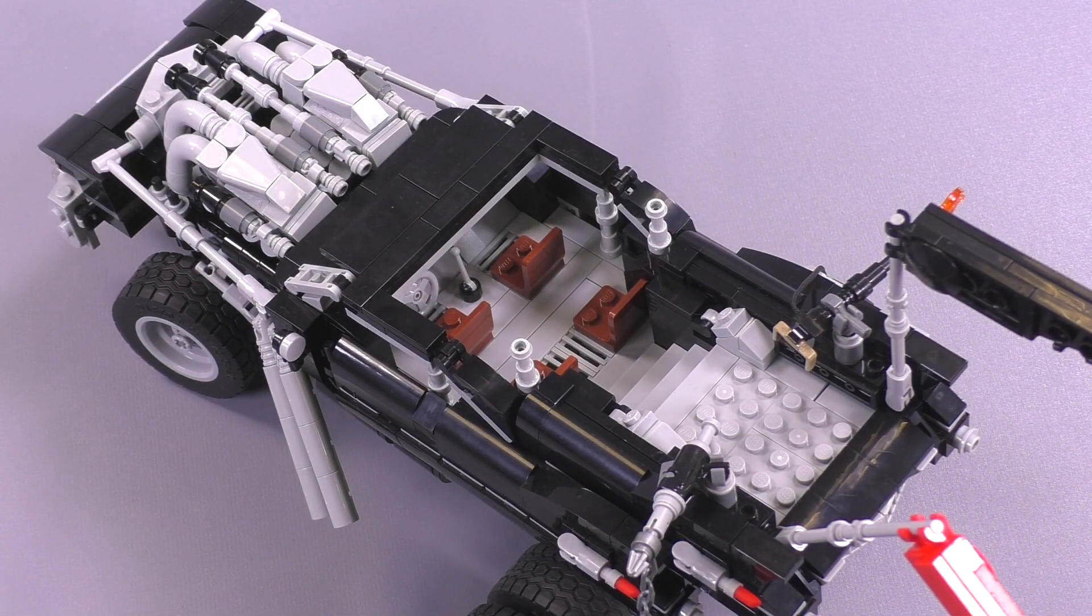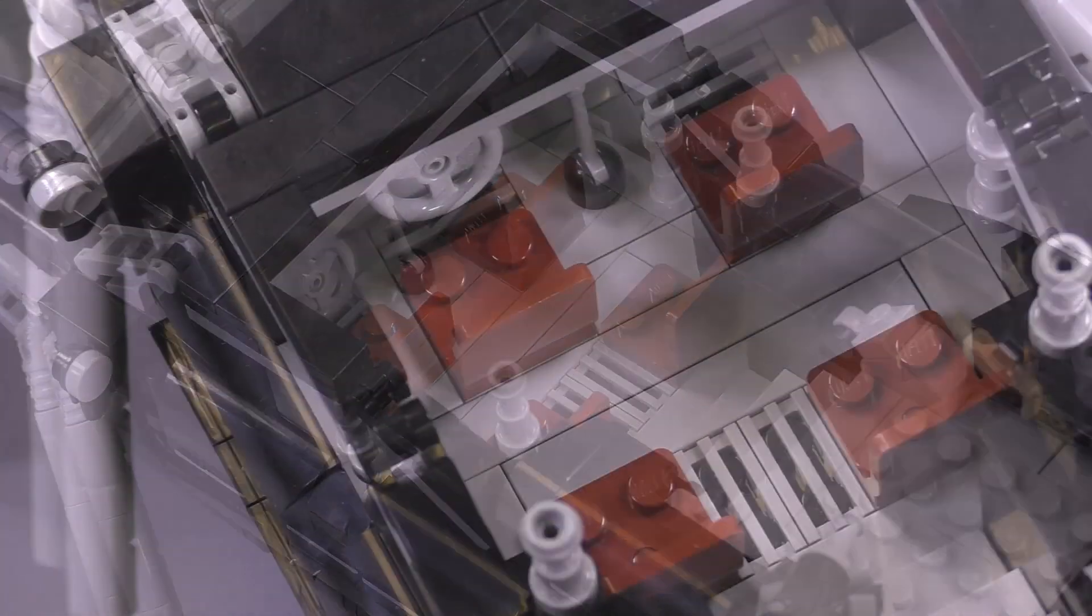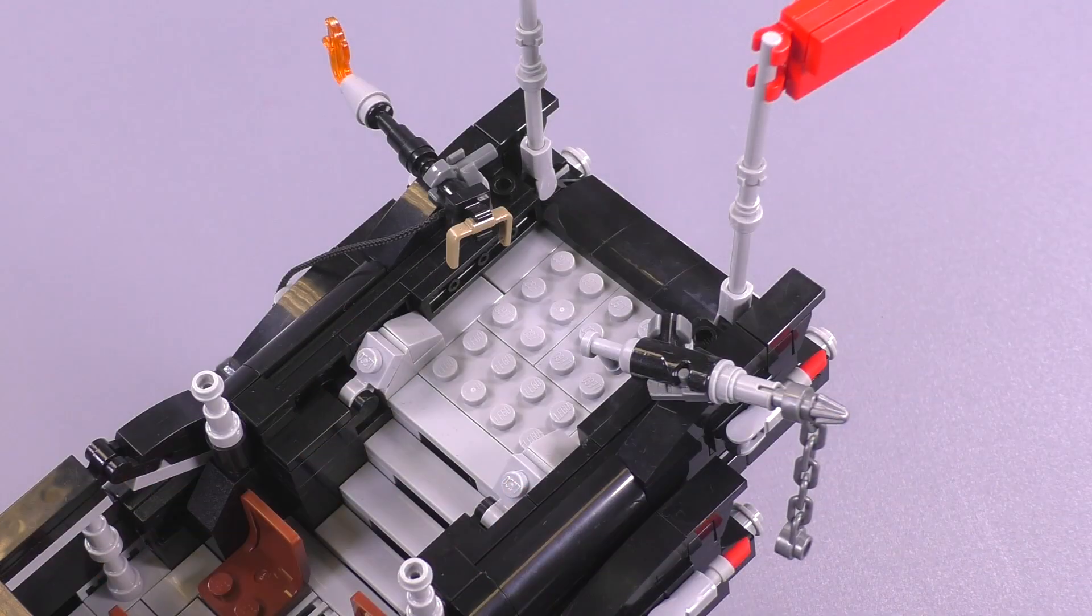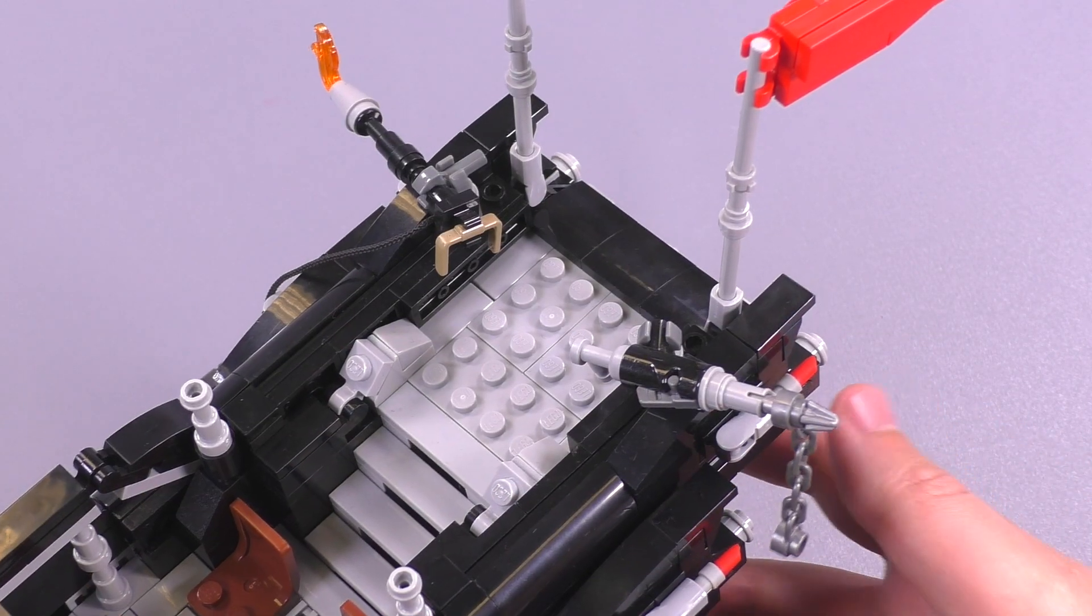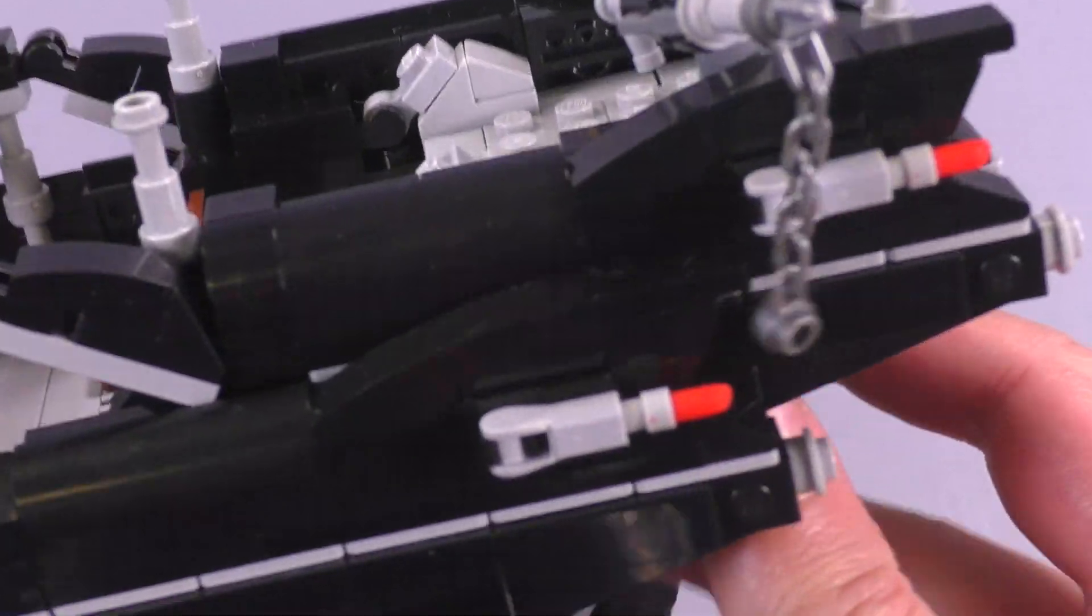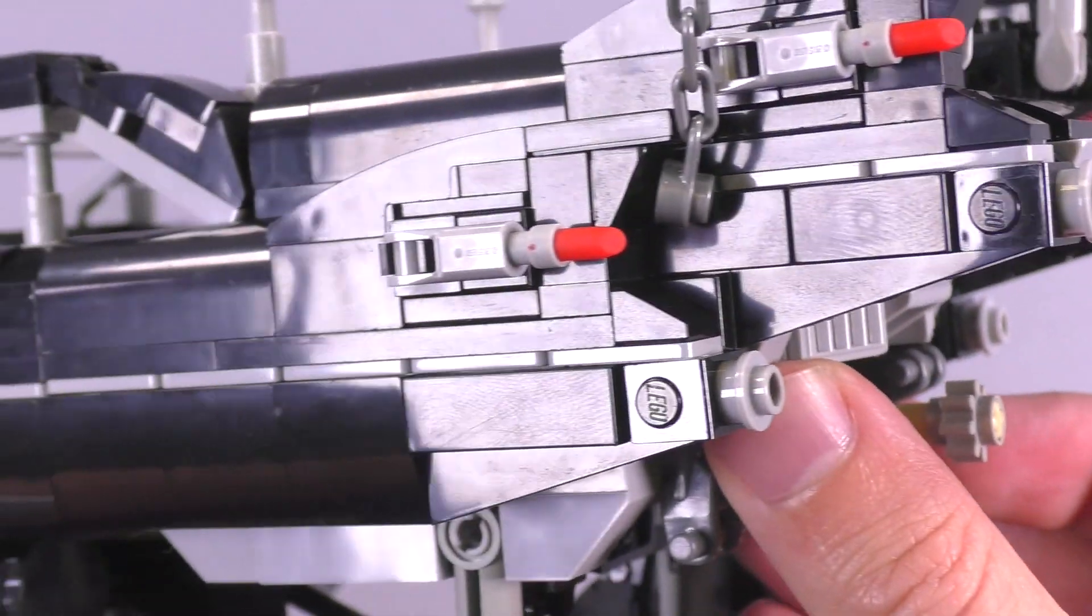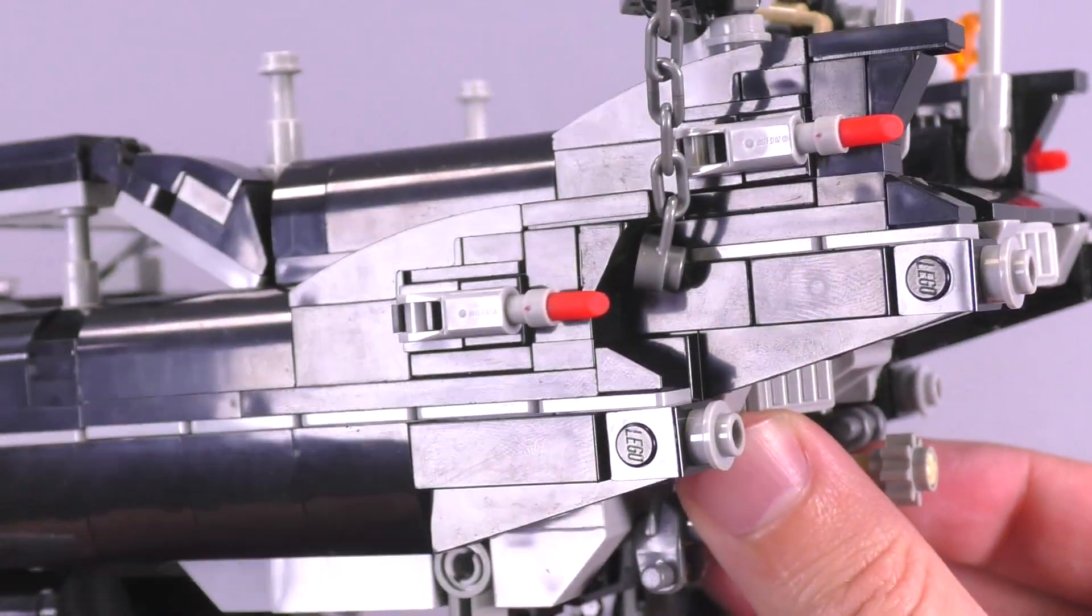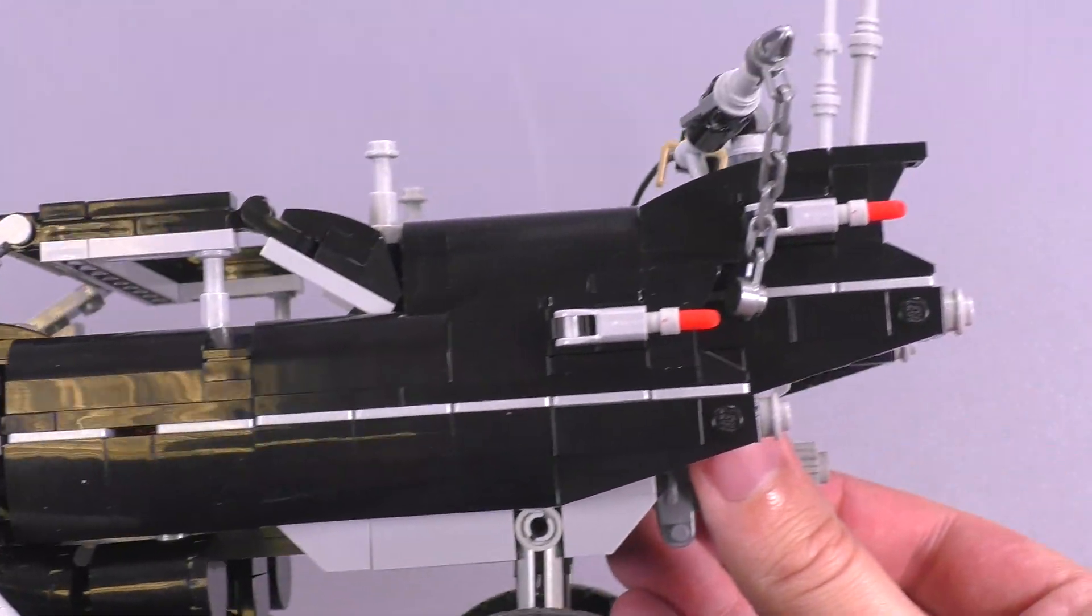On the inside there's a couple of extra seats added, and then the steps lead on up towards the back where there's some more studs for posing minifigs. The lights have changed to lipstick pieces instead of those trans red bits with the little bars in the back. That's a lot more accurate—those lights normally are sort of rocket shaped and very thin and pointy, so that just makes a little bit more sense.